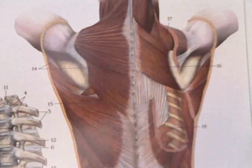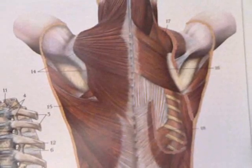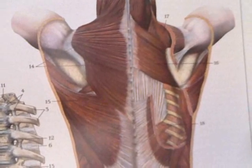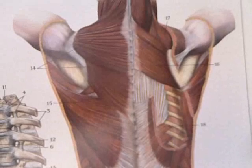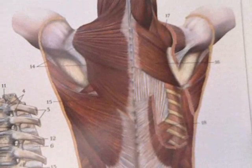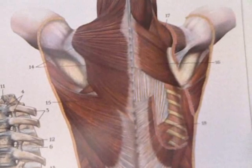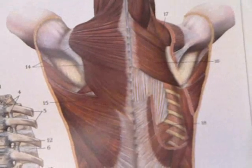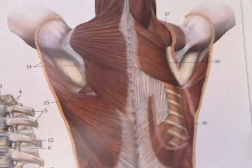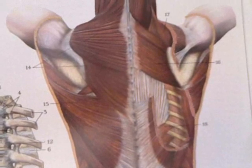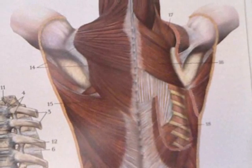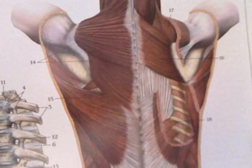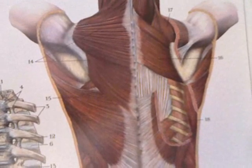With number fourteen we have the trapezius muscle. Number fifteen is the latissimus dorsi muscle. Number sixteen is the rhomboid muscle. Number seventeen is the levator scapulae muscle. And number eighteen is the serratus posterior inferior muscle.